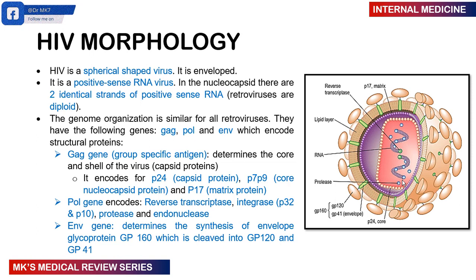The genetic material has three important genes to know about: the GAG gene, the pol gene, and the ENV gene. The GAG gene stands for group-specific antigen, and it determines the core proteins, the capsid protein, and matrix proteins. The three important proteins are: P24 — the capsid protein, which is very important because we can check for this antigen or antibodies against it to make a diagnosis of HIV. Then P7/P9, the core nucleocapsid protein, and P17, the matrix protein.